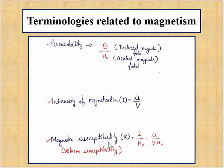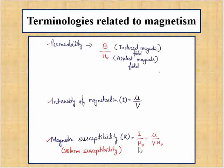From intensity of magnetization we can define magnetic susceptibility, which is the volume susceptibility denoted by kappa. It is the ratio between intensity of magnetization and the applied magnetic field — kappa = I / H₀.